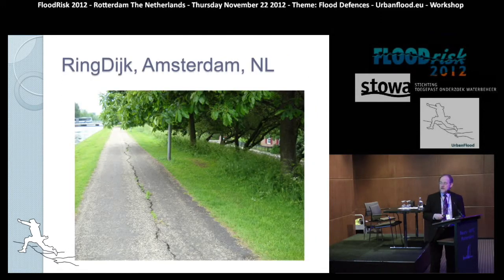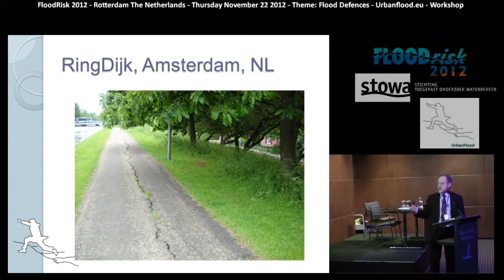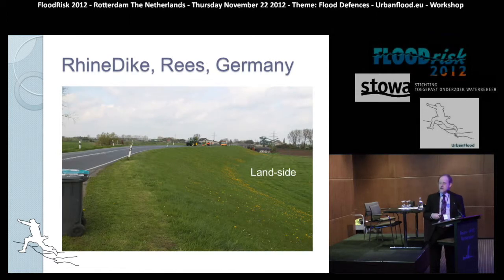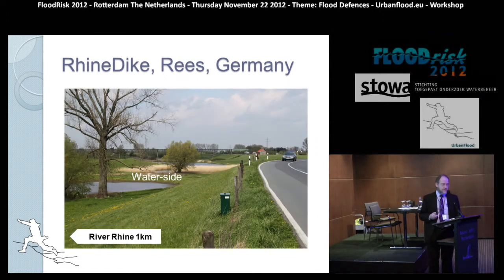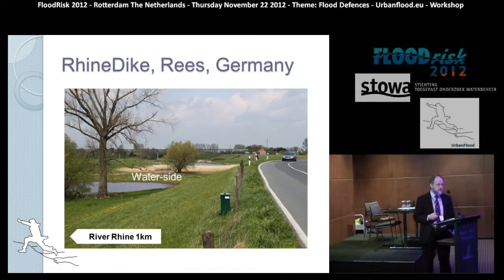This is the dike in Amsterdam. In this situation it's permanently loaded with water, but there is some instability and you can see some cracking — so again we were hoping to pick something interesting up. And finally, this is the dike in Germany, where this is the land side, and this is the water side, which also looks like the land side because the Rhine is about one kilometre away as it's low water season.